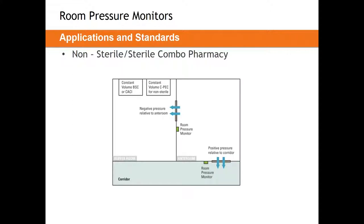As questions come in throughout the presentation, we will review those and come back to them at the end. To close out compounding pharmacies: you can have a combination pharmacy that is both non-sterile and sterile compounding. These require different primary engineering controls — different biological safety cabinets — and there's a cleaning exercise to go between them. As far as room pressure monitors themselves, they are applied identically to the other applications.